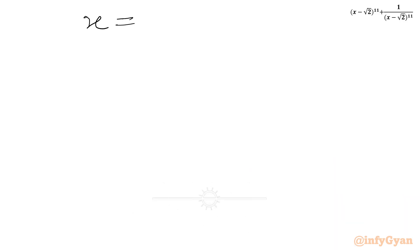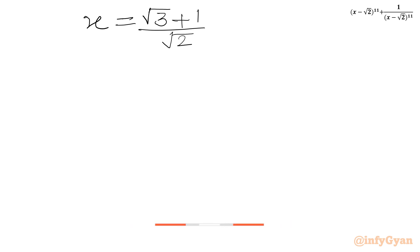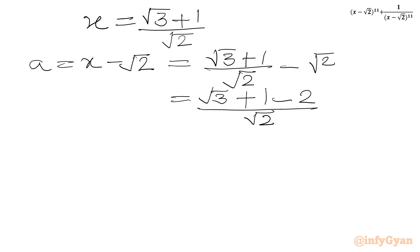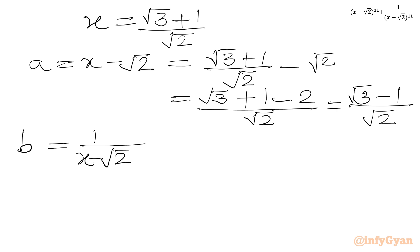Let us find a and b. Our x equals (root 3 + 1) over root 2. So a equals x minus root 2, which is (root 3 + 1)/root 2 minus root 2. Taking a common denominator, this becomes (root 3 + 1 - 2) over root 2, which equals (root 3 - 1) over root 2. Now I will calculate b, which is 1 over (x minus root 2).